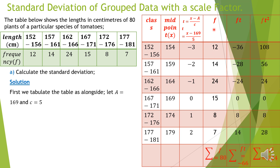Column 4 carries the frequencies — just copy these values vertically: 12, 14, 24, 15, 8, and lastly 7. Each frequency is copied to its respective class. Summing them up gives a total frequency of 80, since 12 + 14 + 24 + 15 + 8 + 7 = 80.